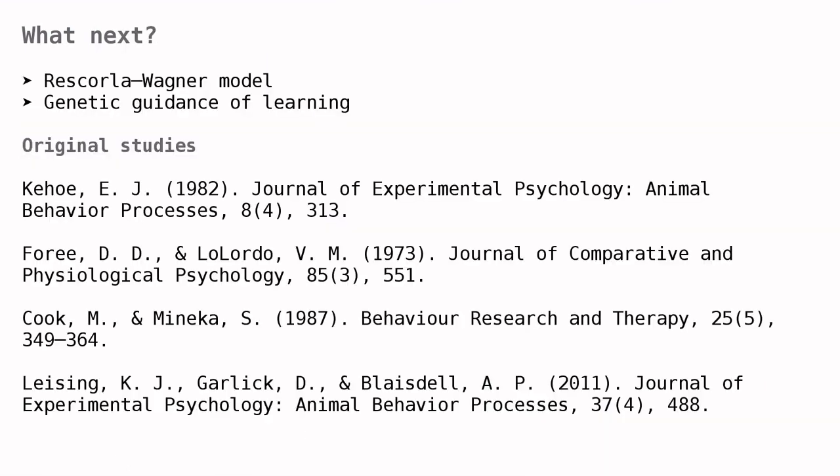Here are my suggestions for some related lessons. The Rescorla-Wagner model is a major theory of learning that, among other things, helps us understand exactly why overshadowing happens. The lesson on genetic guidance of learning puts overshadowing in the broader context of how genes can help animals to learn efficiently.